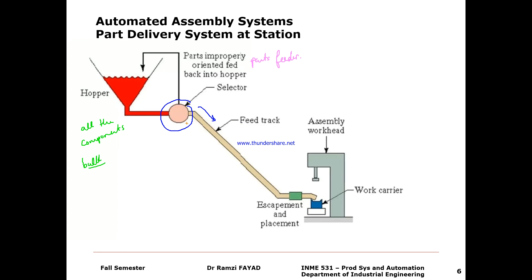The feeder track usually moves a component from the hopper and parts feeder to the location of the assembly work head. The escapement device, situated here, removes a component from the feeder track one at a time.